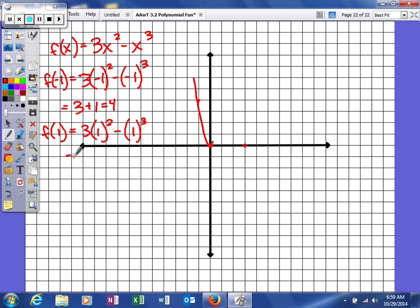So next I'll find f of one. When I do that, that'll give me a nice little three here. And there it'll give me minus one. So I'll be at two.